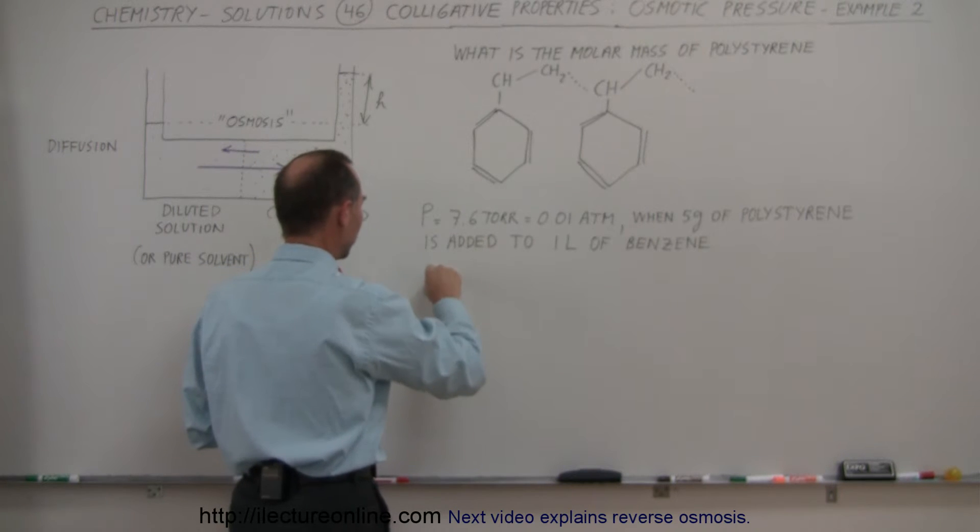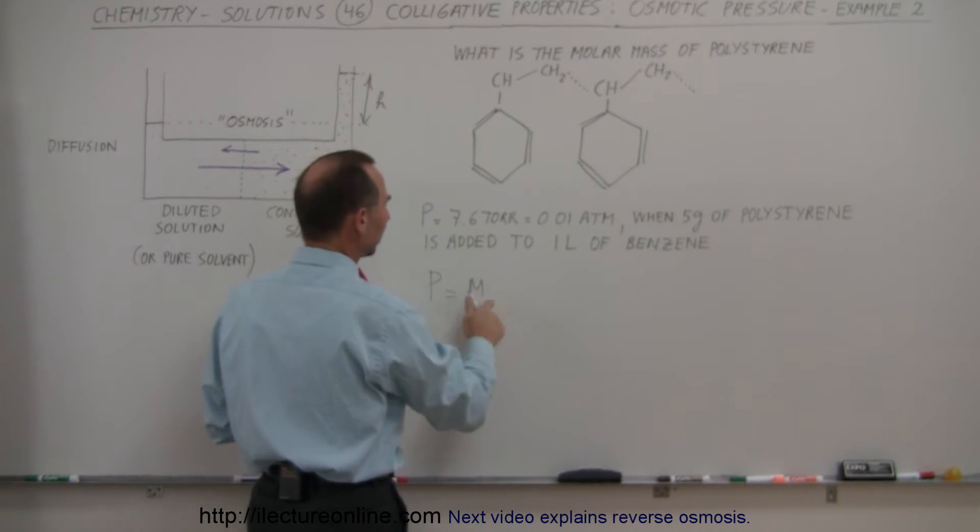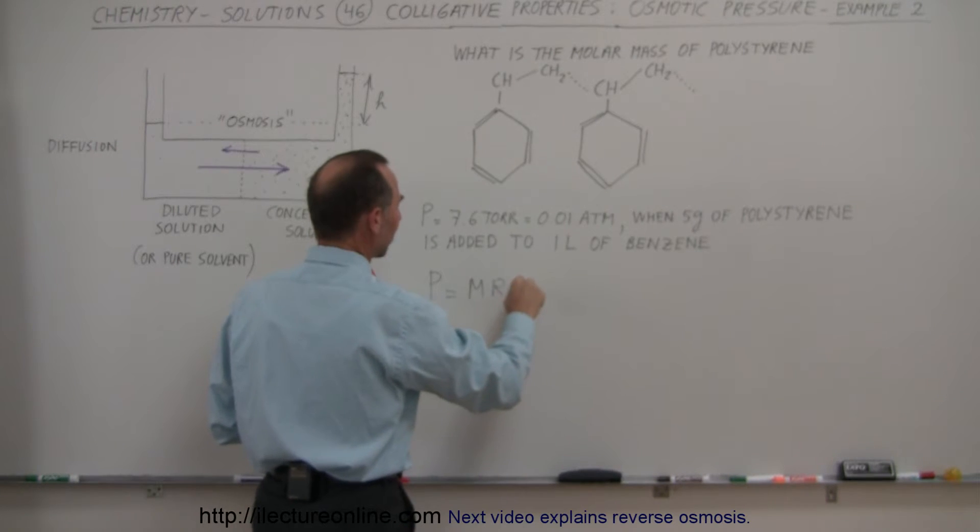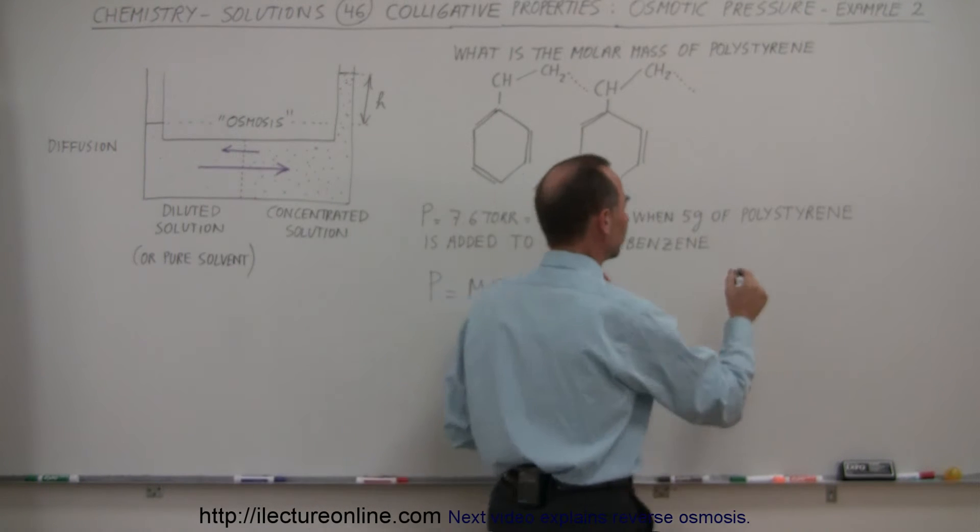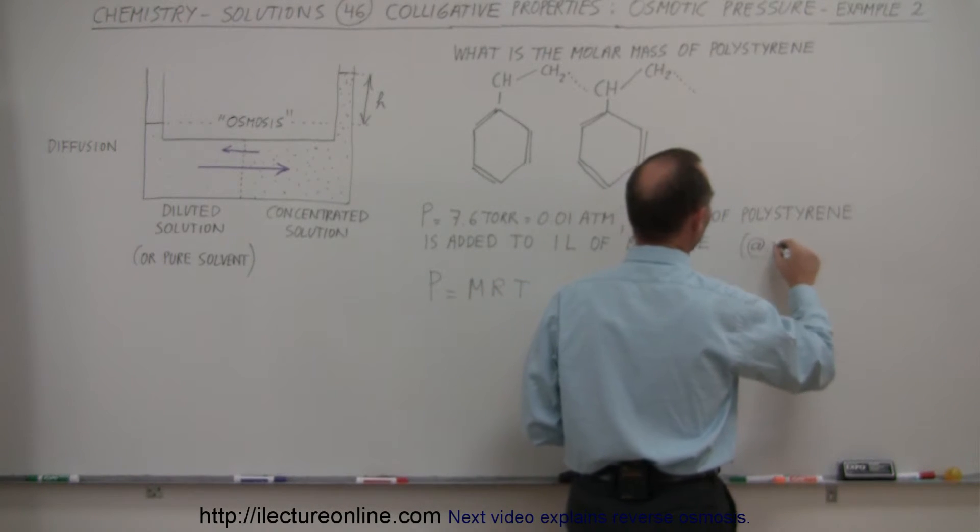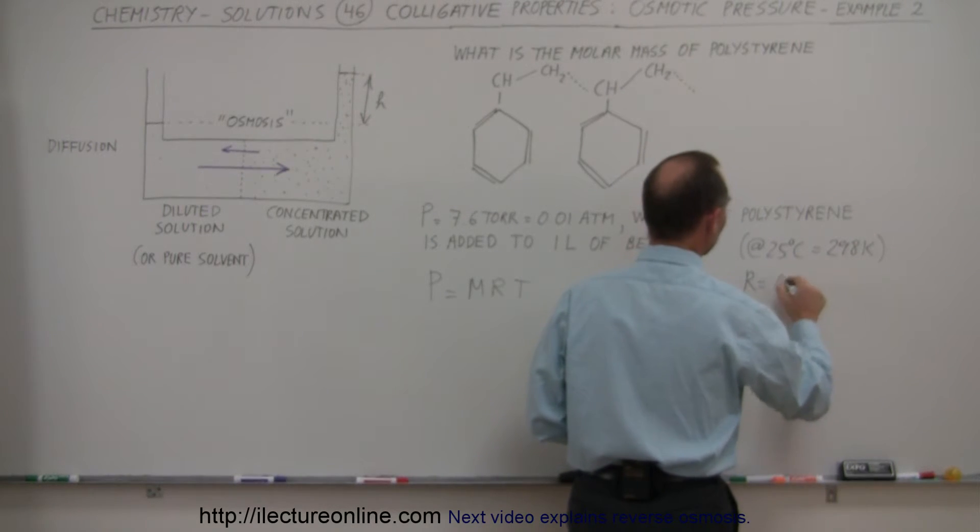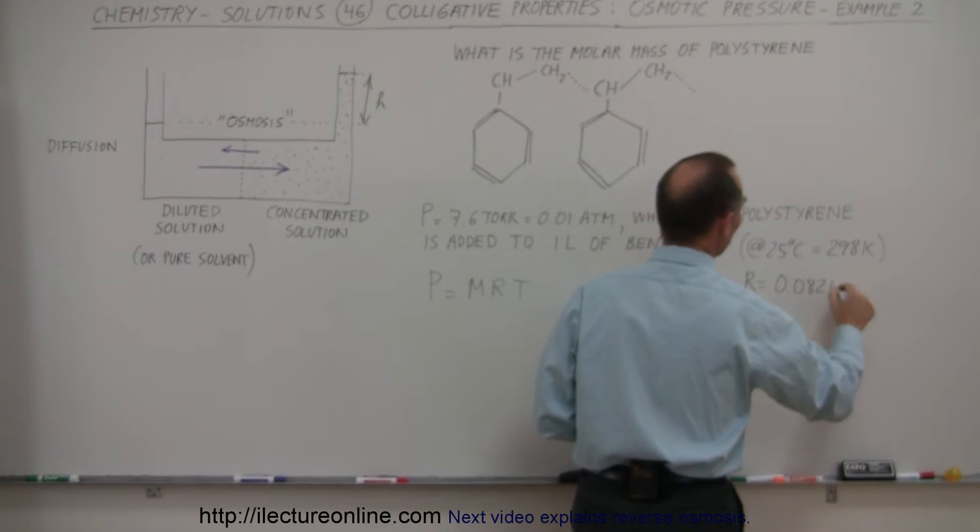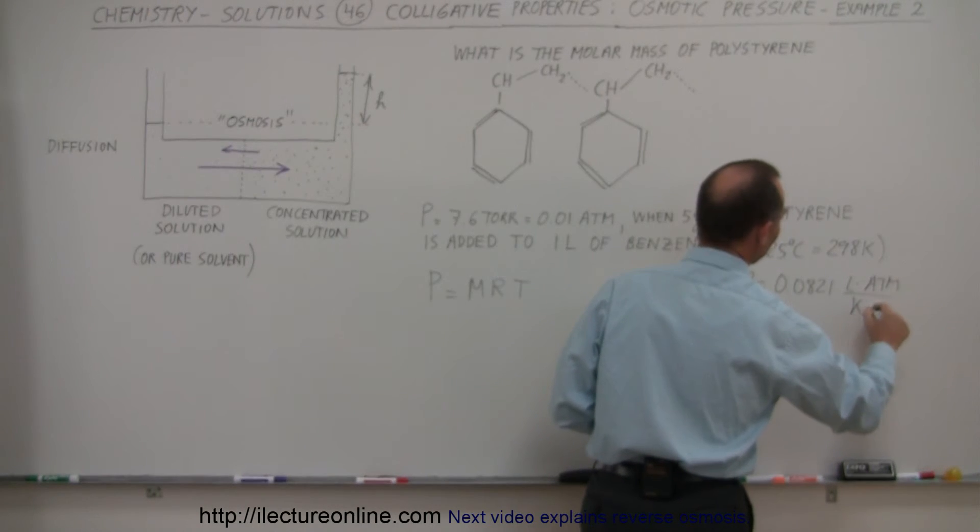Alright, so we say, well, the osmotic pressure is equal to the molarity times the gas constant R times the temperature T. So, let's say that this happens in laboratory conditions at about 25 degrees centigrade, which is 298 Kelvin. Also, know that the gas constant R is equal to 0.0821 liter atmospheres divided by Kelvin times moles.